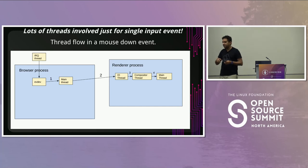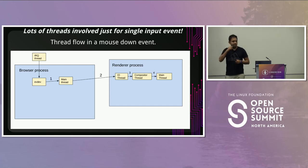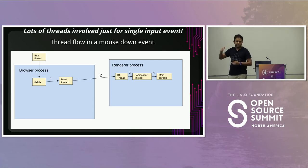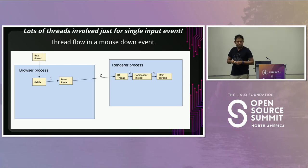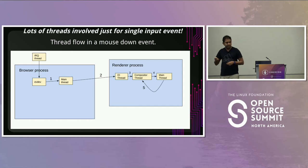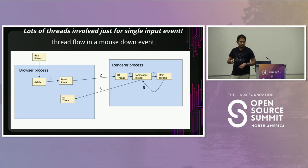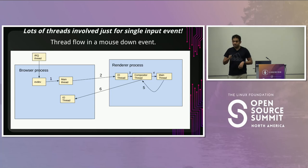The reason this is two steps is that some input events can be directly handled by the compositor — like scrolling or zooming — without requiring the renderer main thread to do anything, since the compositor thread can directly move already-rastered layers. But in this case, it decided to wake up the main thread. There's a response back to the compositor thread after the main thread handled the event, then that goes back to the browser process. So already there are so many threads, so many wakeups and jumps just to handle a single input event.